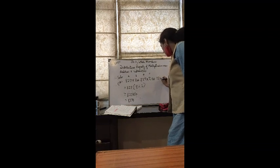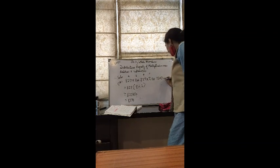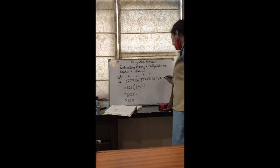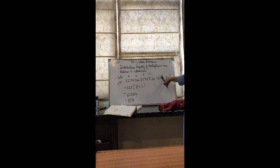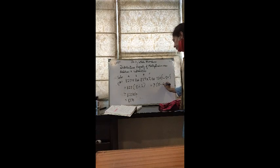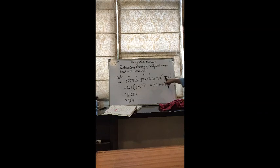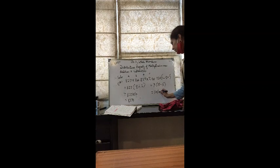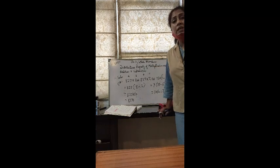For part B: 15 into 7 minus 5 into 7. You can see that 7 is common on both sides. Here a is 15, b is 7, and c is 5 — wait, actually 7 is the common factor. Taking 7 out as common, we are left with (15 minus 5), which is 10. So the answer is 7 into 10, that is 70. Very simple.